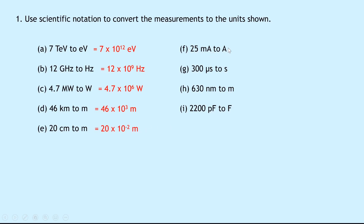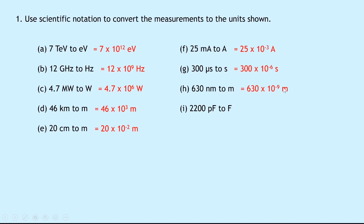Part F says 25 milliamps to amps. Milli is times 10 to the power of minus 3, which gives us 25 times 10 to the minus 3 amps. Part G is 300 microseconds to seconds. Micro is times 10 to the power of minus 6, so this becomes 300 times 10 to the minus 6 seconds. Part H is 630 nanometers to meters. Nano is times 10 to the power of minus 9, so we get 630 times 10 to the minus 9 meters. And lastly part I: 2200 picofarads converting to farads just becomes 2200 times 10 to the minus 12 farads.